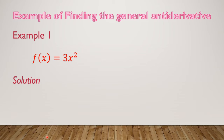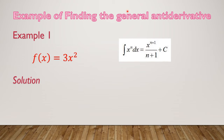Before we proceed to indefinite integrals, let's see some examples of finding the general antiderivative. Example 1: the function f equals 3x squared. Before we start, we should remember the formula to find the antiderivative: the integral of x to the power of n dx equals x to the power of n plus 1, over n plus 1, plus C.